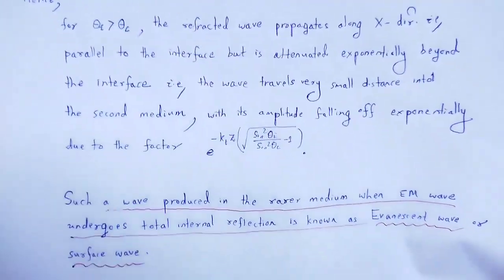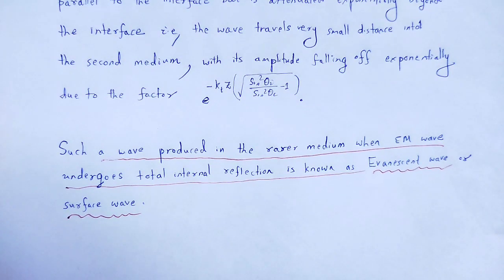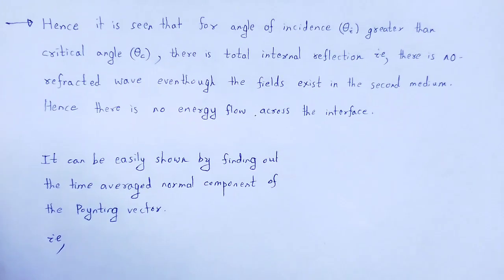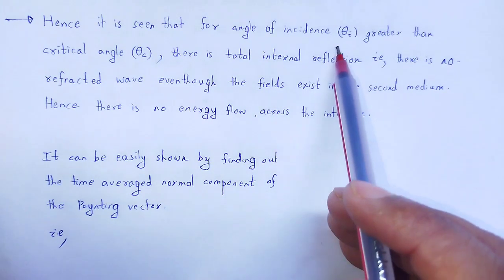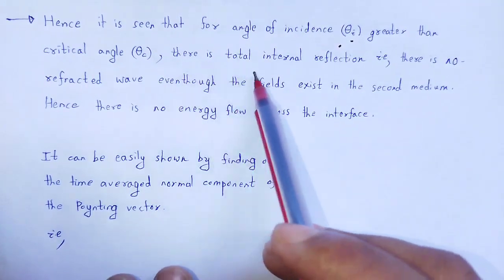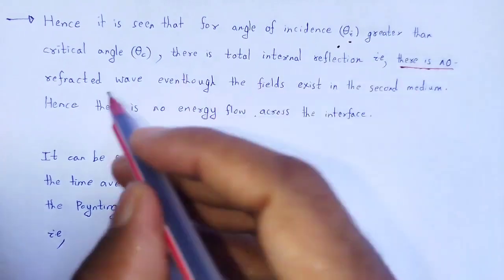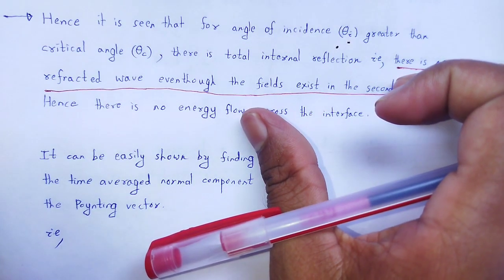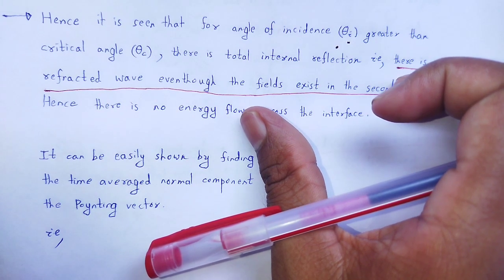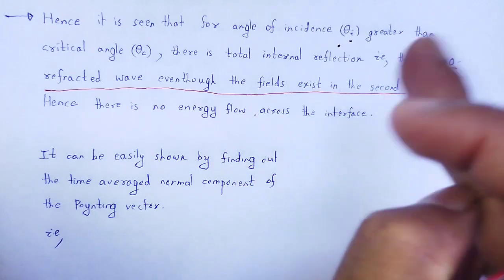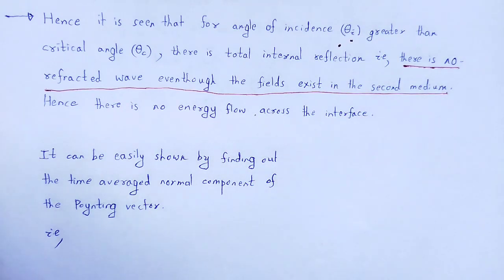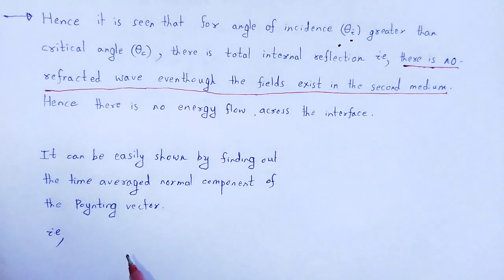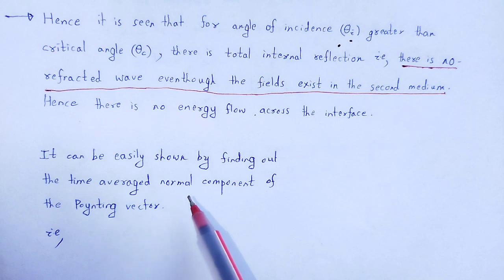For angle of incidence θ_i greater than the critical angle, we see total internal reflection, meaning there is no refracted wave. Even though the fields exist in the second medium — that wave is called evanescent wave or surface wave — there will be no energy flow. This can be proved using the Poynting vector concept. There is no energy flow across the interface, which can be shown by finding the time-average normal component of the Poynting vector.